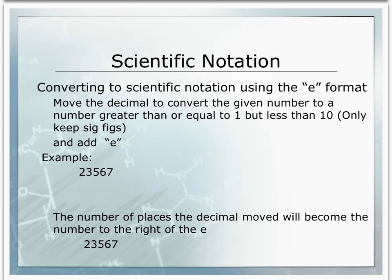Another version of scientific notation is the E format. I show this format because typically scientific notation on calculators will be shown with an E instead of the times 10. The E format can be written with a little e or a big E — it doesn't matter whether you use lowercase or uppercase.